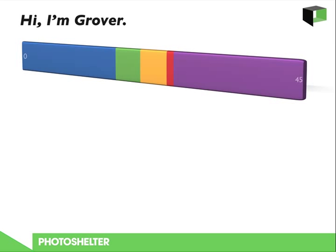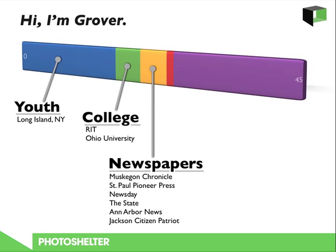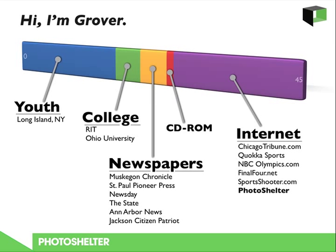Before I get started, I'd like to talk about who I am and where I've been. I've created a little bar chart of my life. The purple years was my youth in Long Island, New York. Then I went to college at RIT and Ohio University, worked at a bunch of newspapers mostly in the Midwest — Michigan primarily. Then I decided to leave newspapers to follow my dreams and go into CD-ROMs. Then I went into the Internet and was part of the team that started the first Chicago Tribune website. Then I left Chicago, went to San Francisco, joined Quokka Sports, where we did large-scale sports entertainment websites like NBCOlympics.com and Final4.net. After the dot-com meltdown, I had some time off, so a bunch of friends and I started SportsShooter.com. And then three years after that, we founded PhotoShelter.